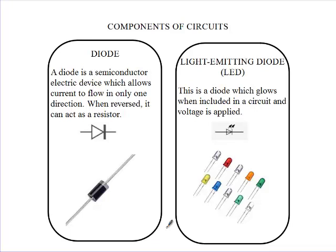Another device that can act as a resistor is a diode. A diode is a semiconductor electric device which allows current to flow in only one direction. When you reverse a diode, it becomes a resistor because it is not going to allow current to flow. You are restricting the current, giving it only one path in which to flow.